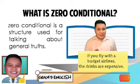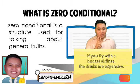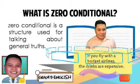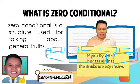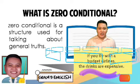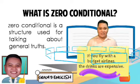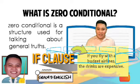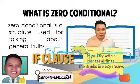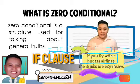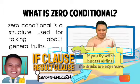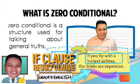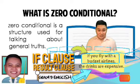The zero conditional is composed of two ideas: the one with the if clause and the one with the result clause. Based on our example sentence — where is the if clause? Very good: 'If you fly with a bunch of airlines.' And the result clause? 'The drinks are expensive.' Very good. So that is the zero conditional — it talks about general truths.